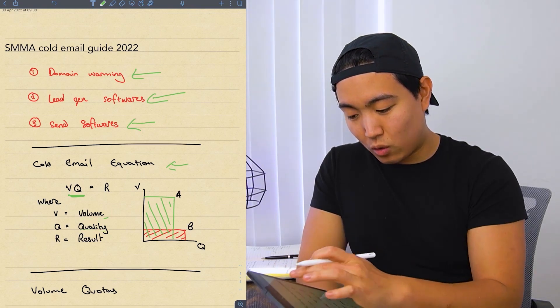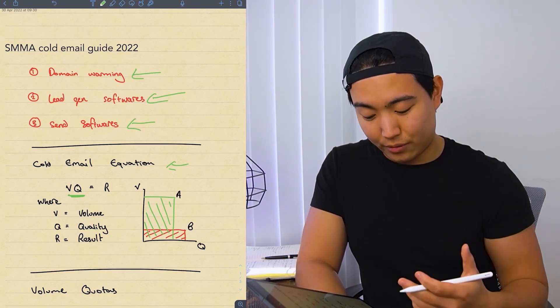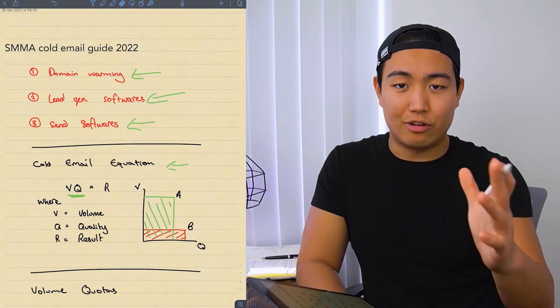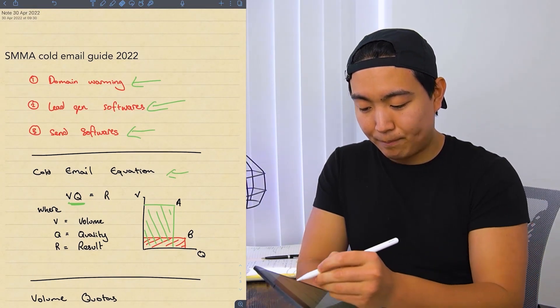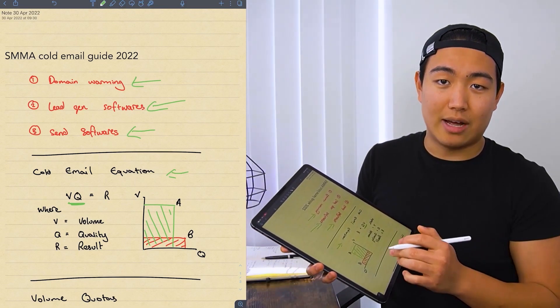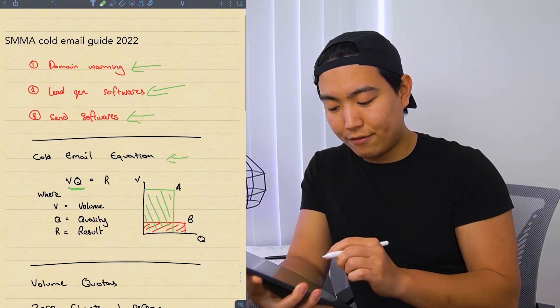The results you get from cold email is a multiplication of the volume in which you do and the quality. So quality meaning the quality of your offer, the scripts, things along those lines. And the volume is basically just how much you're sending on a daily basis. And you multiply that, you get results. So really simple equation. But to help you visualize it on a graph...